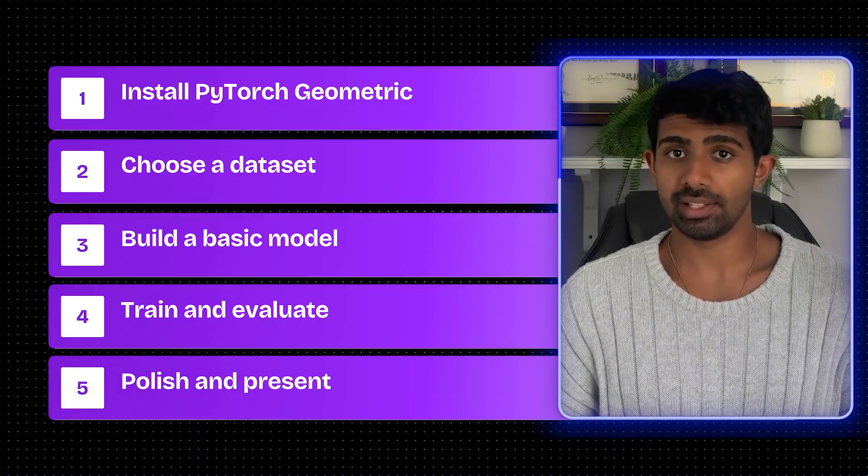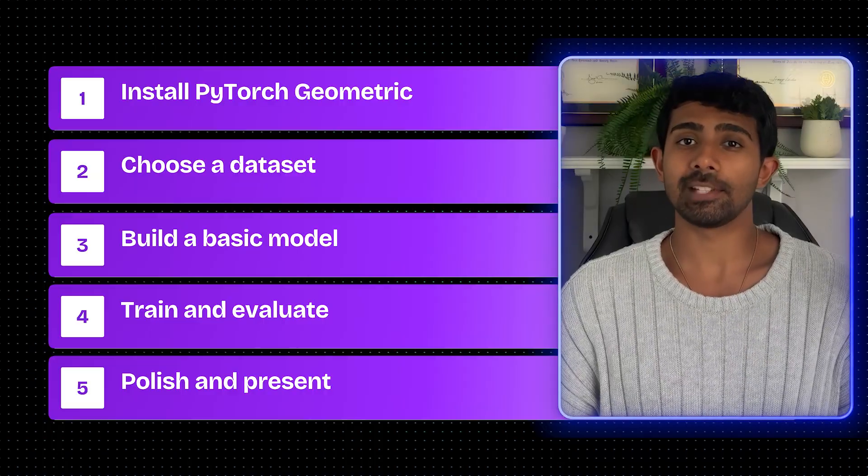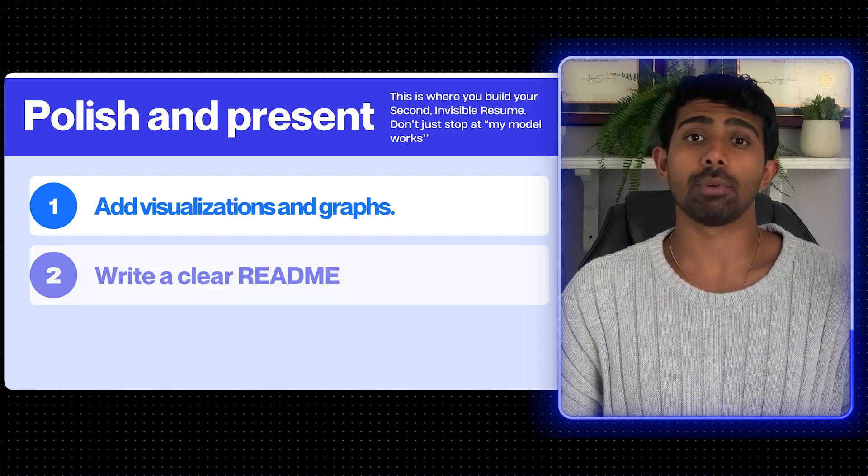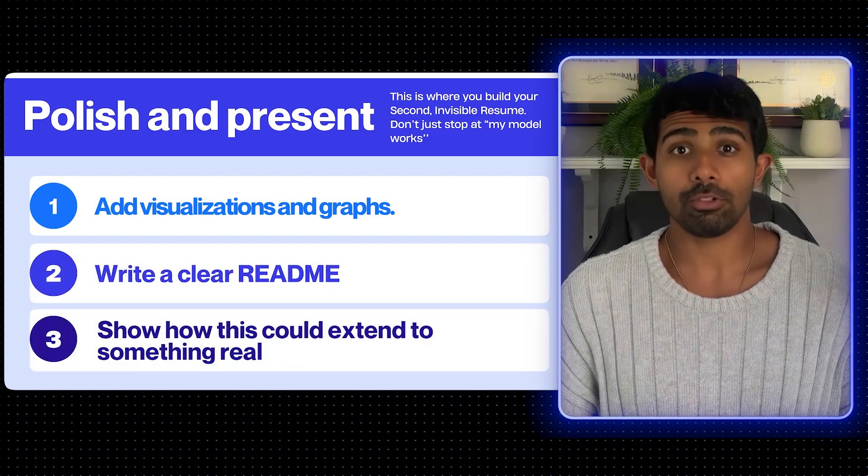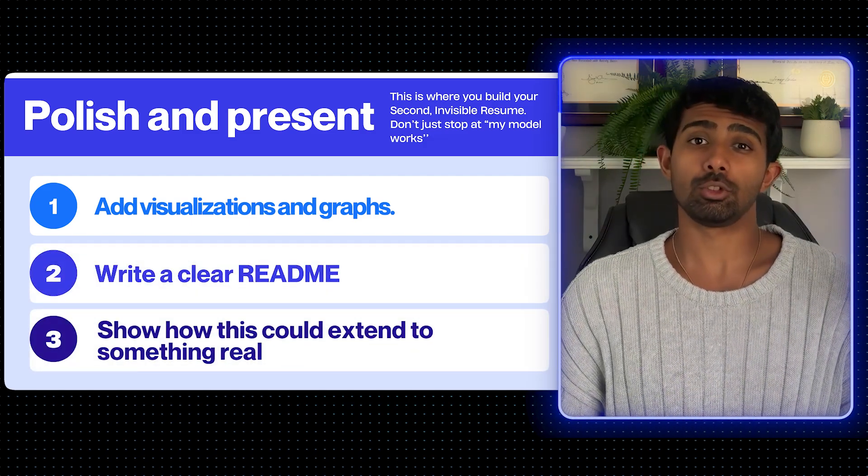Step 5: polish and present. This is where you build your second invisible resume. Don't just stop at 'my model works.' Add visualizations and graphs, write a clear readme, and show how this could extend to something real — like drug molecules or fraud detection. This isn't going to make you an expert in GNNs overnight, but even a simple GNN project puts you ahead of 99% of students. The step-by-step guide is proof that it's not that complicated — but only if you actually take action today.